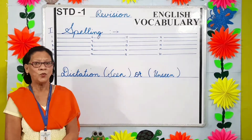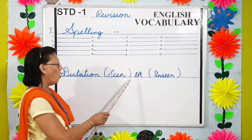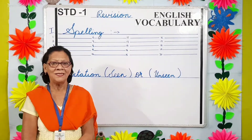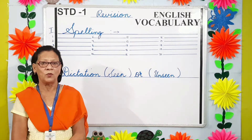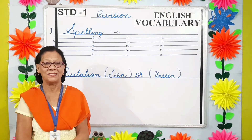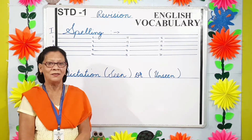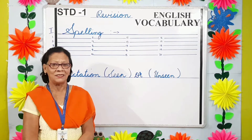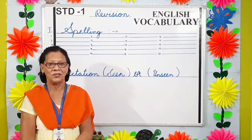The second question is dictation — seen or unseen. The seen passage will come from the chapters in the second term first assessment syllabus: that's chapter 7, chapter 8, and chapter 9. Dictation unseen will come from any other English book.